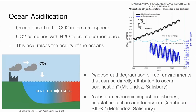So what exactly is ocean acidification? Ocean acidification occurs when the oceans absorb CO2 from the atmosphere. That CO2 then combines with H2O, or water, to create carbonic acid. This acid then raises the acidity of the oceans. In the graphic over in the top right-hand corner, the black line shows the amount of CO2 in our atmosphere, and the blue line shows the pH levels of the ocean.